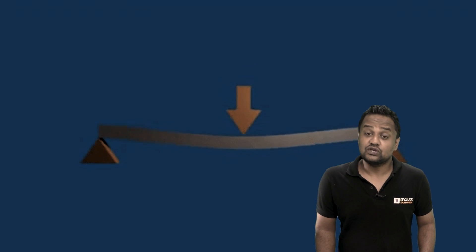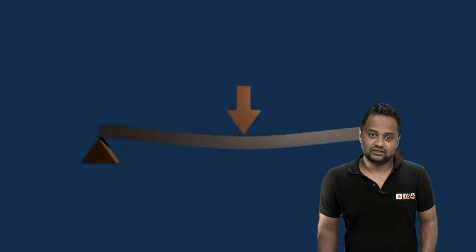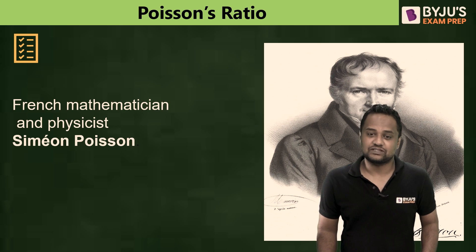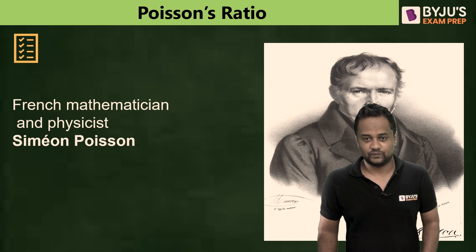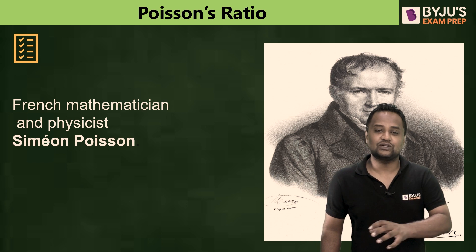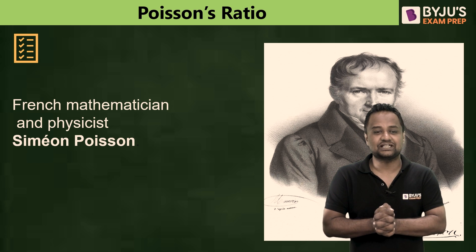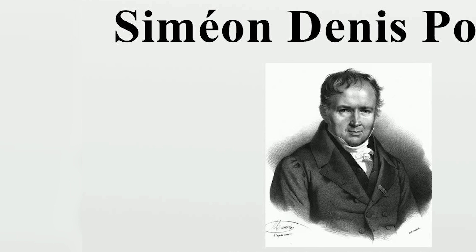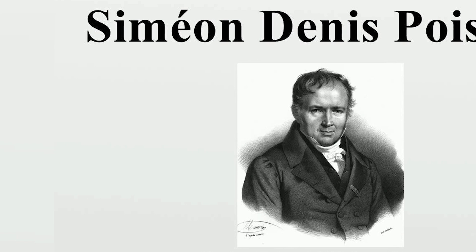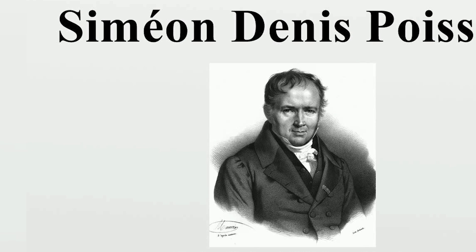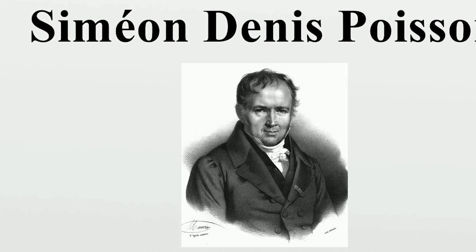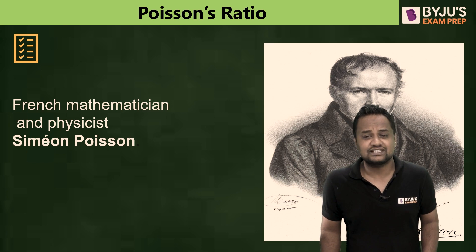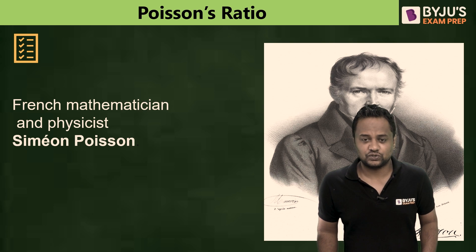Apart from these, we also observe one more thing — Poisson's ratio. Before coming to Poisson's ratio, let me tell you that there was a French mathematician and physicist whose name was Simon Poisson. On his name only, this Poisson's ratio has come.